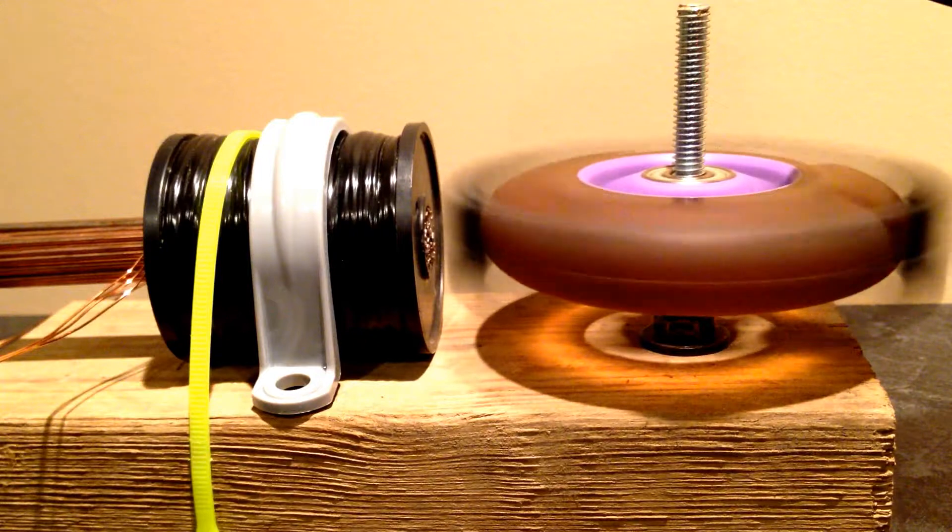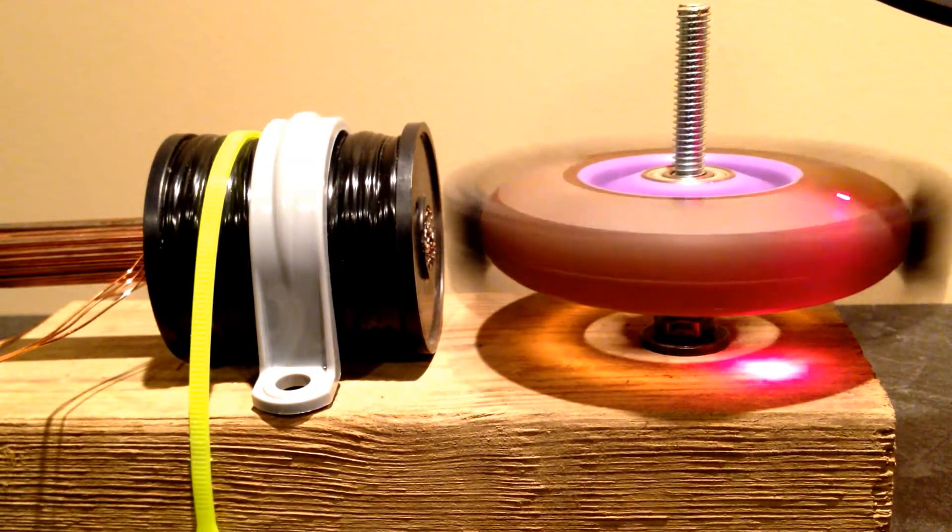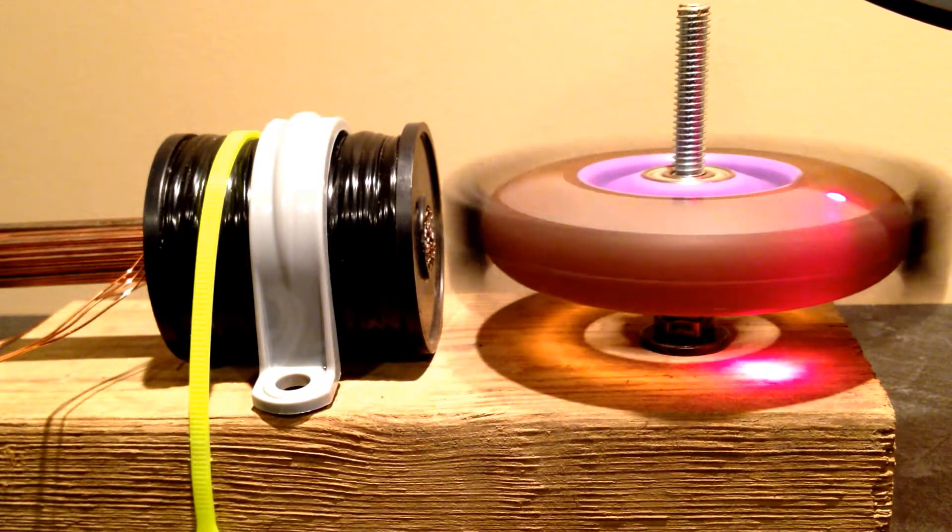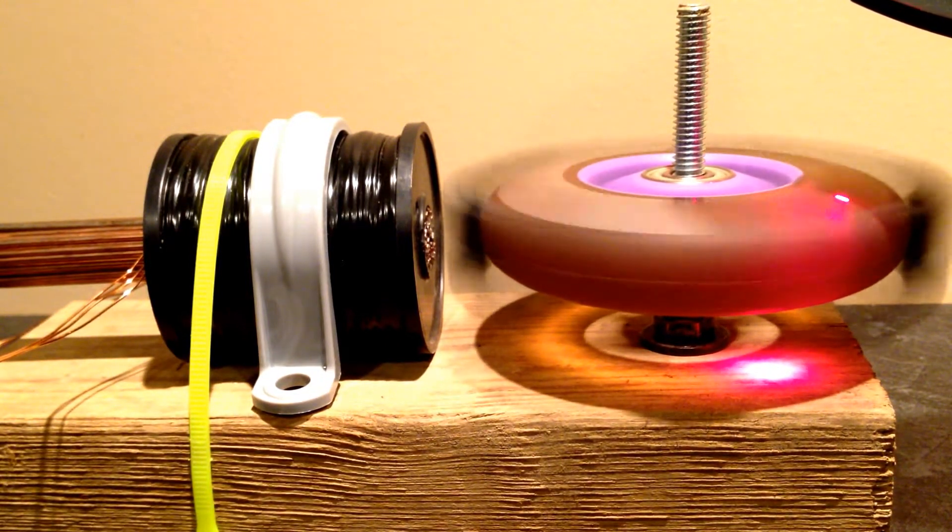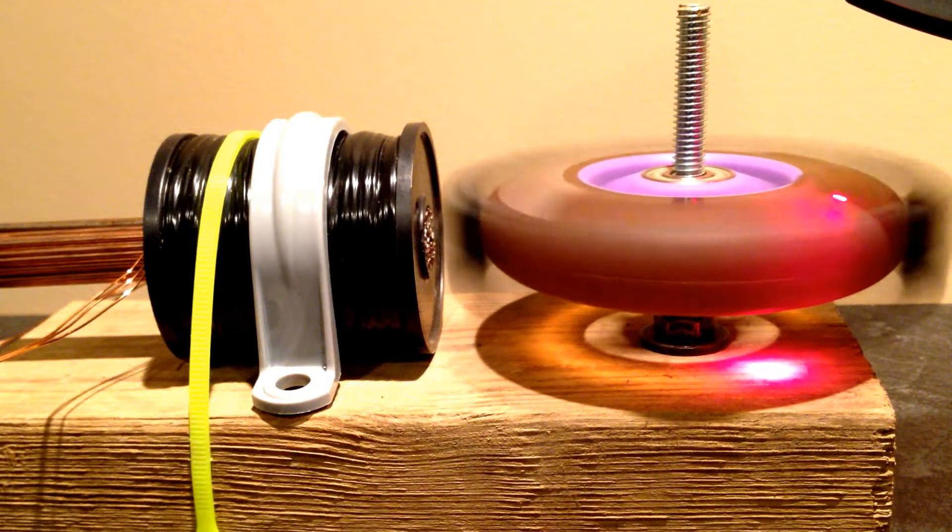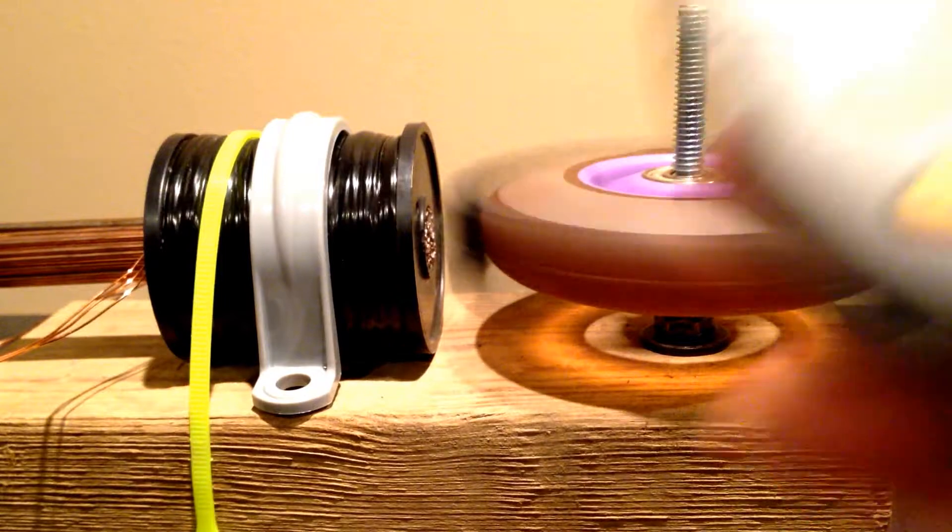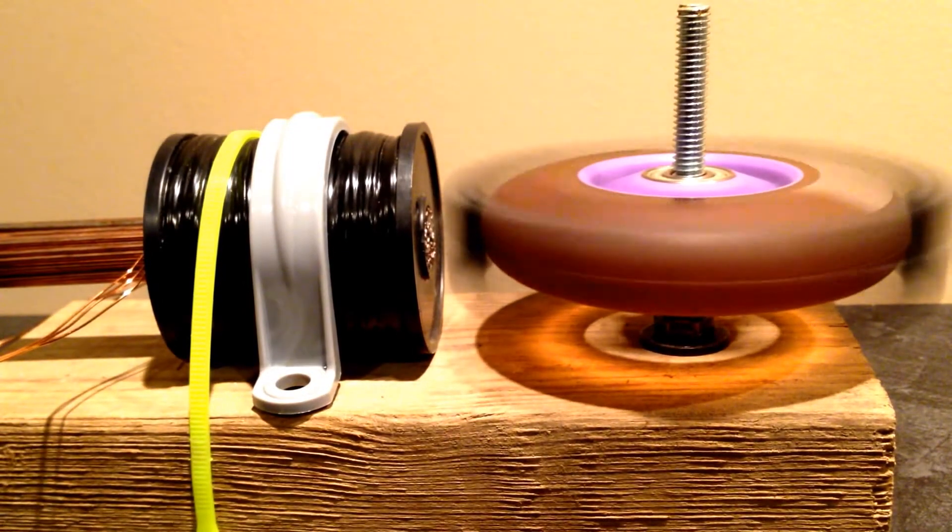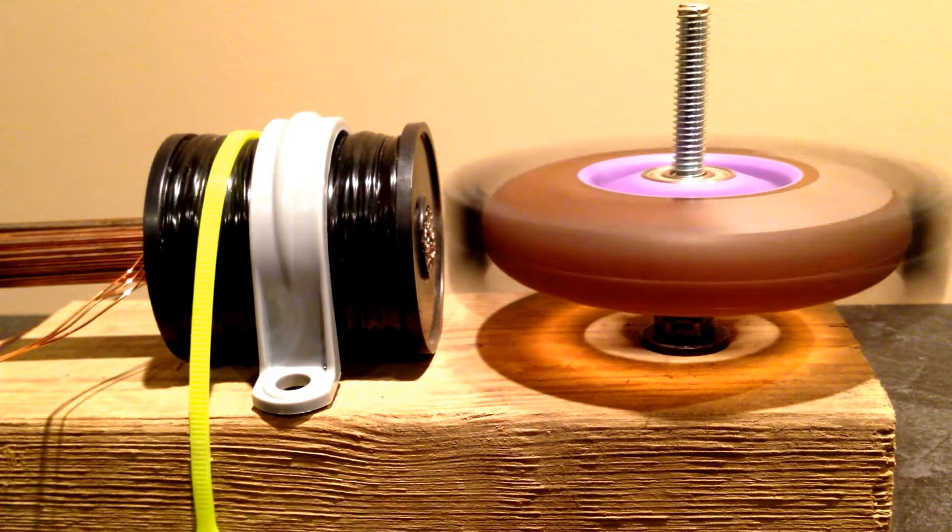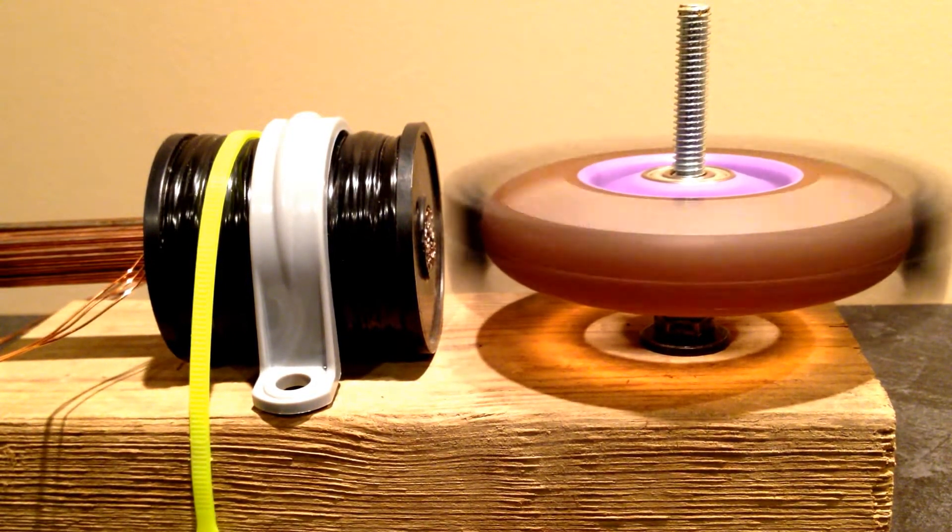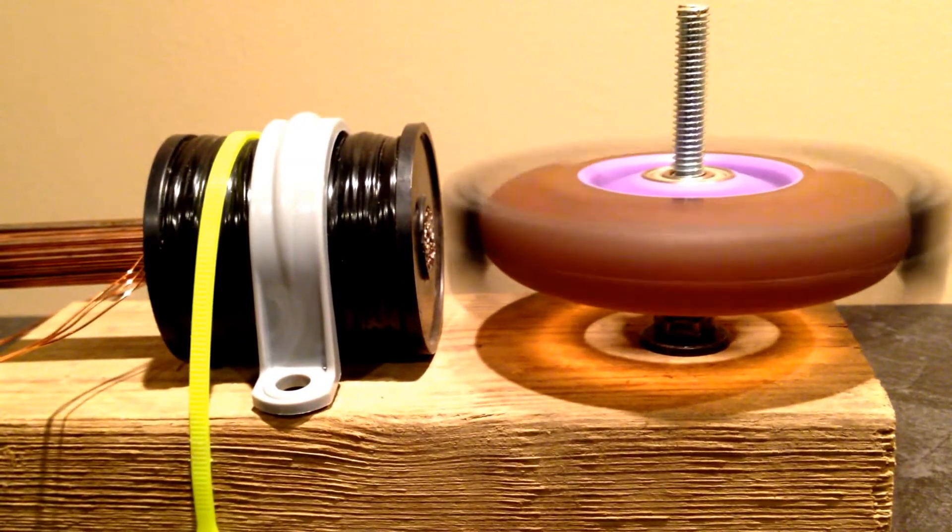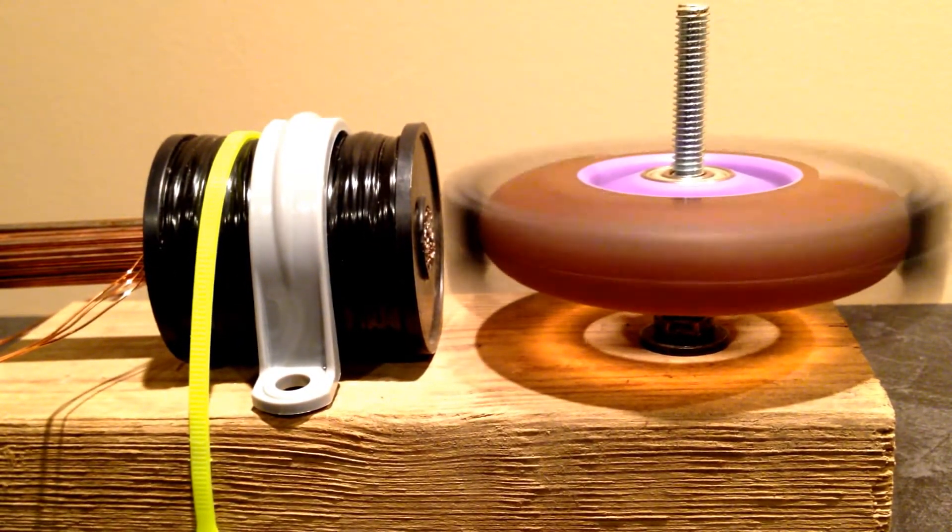It's about 811 right now just starting up. Now whenever this thing gets going it ends up being around 950 RPM which for a nine volt battery and a very simple circuit not too shabby. See we're at 874 right now and it should level out around 950 or so.